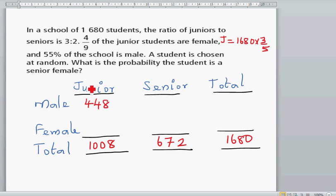448 juniors are female. So that was a mistake. 448 are females. So I should write 448 here. Let me write 448 are female.